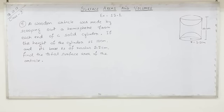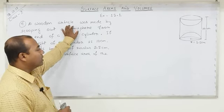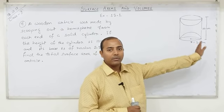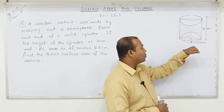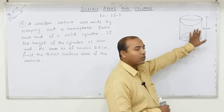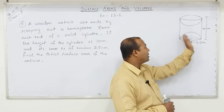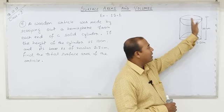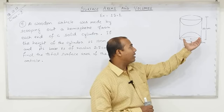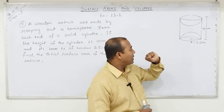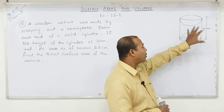Next, question number 9: A wooden article was made by scooping out a hemisphere from each end of a solid cylinder. If the height of the cylinder is 10 centimeters and its base radius is 3.5 centimeters, find the total surface area of the article. Initially it was a solid cylinder; then from both ends, two hemispheres were scooped out — material removed in hemispherical shape from top and bottom.